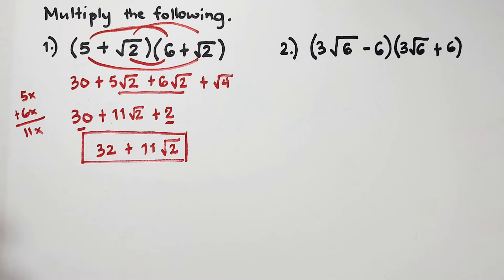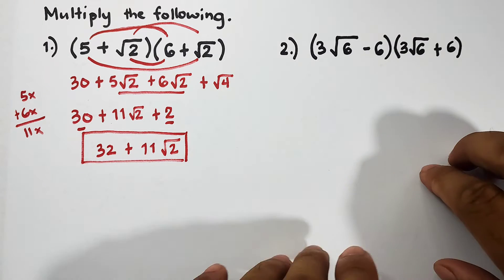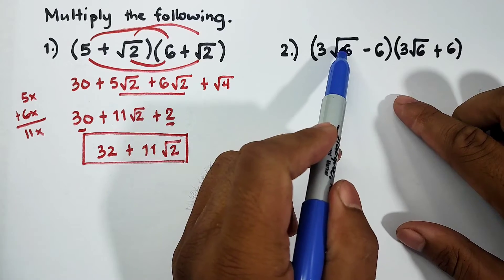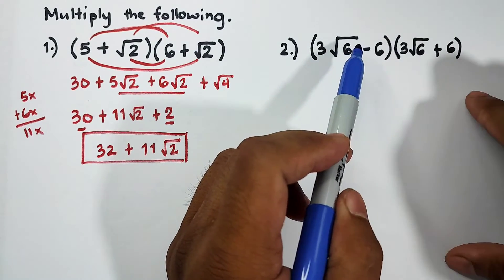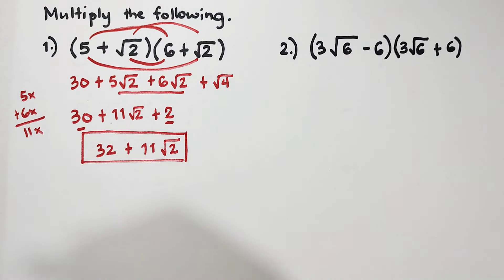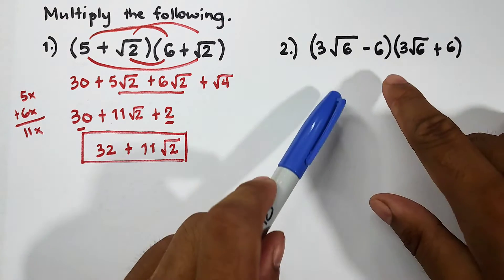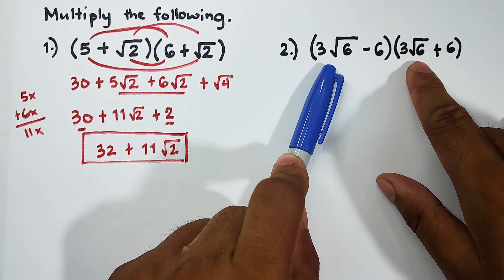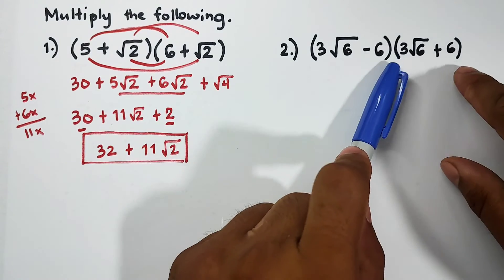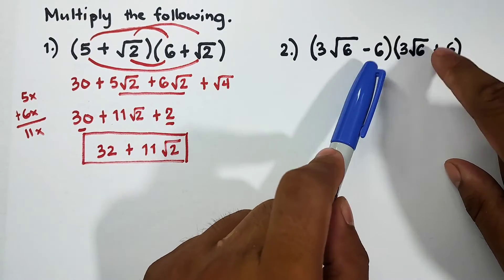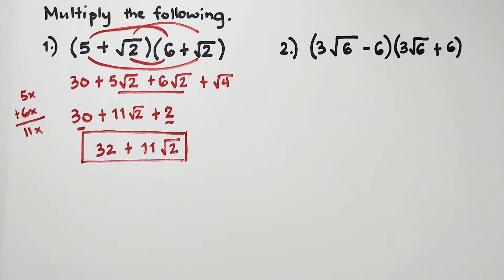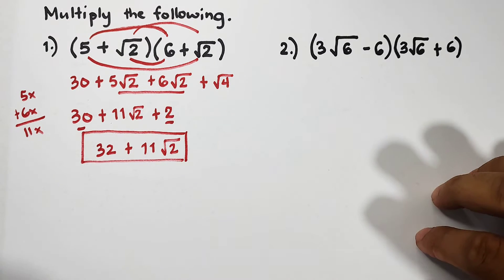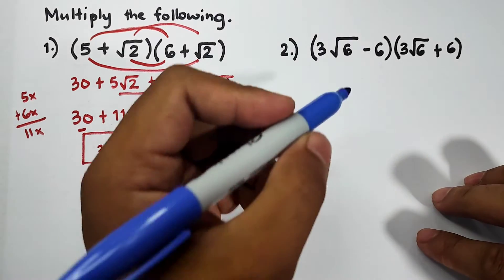Now let's move on with the next example. We have 3 square root of 6 minus 6 times 3 square root of 6 plus 6. If you notice, the first terms are the same, the last terms are the same, and the difference is the operations between the two terms. We have a pattern in algebra for this difference of two squares.